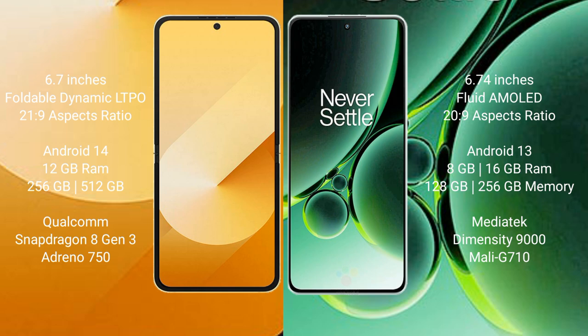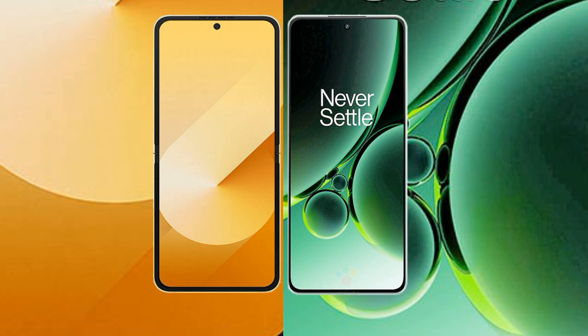Samsung Galaxy Z Flip 6 comes with 12GB RAM and 256GB internal storage, a Qualcomm Snapdragon processor, and Adreno 750 GPU. OnePlus Nord 3 comes with 8GB or 16GB RAM and 128GB or 256GB internal storage, a MediaTek Dimensity 9000 processor, and Mali-G710 GPU.